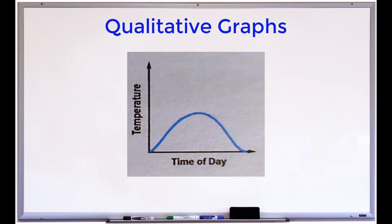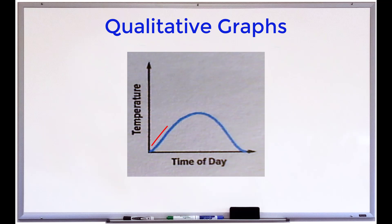For example, in this graph we see that the y-axis represents temperature and the x-axis represents time of day. We can see that the graph starts out by increasing, then it reaches a high point and begins to decrease. What this is telling us is that early in the day the temperature is low and slowly increases as the day goes on, then at about the middle of the day the temperature begins to decrease again.